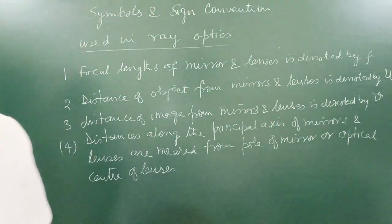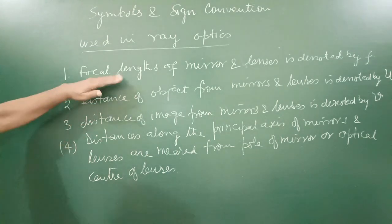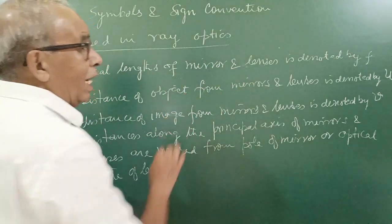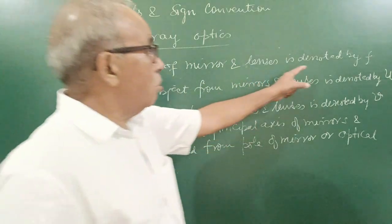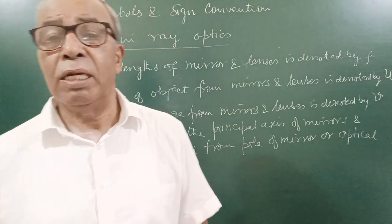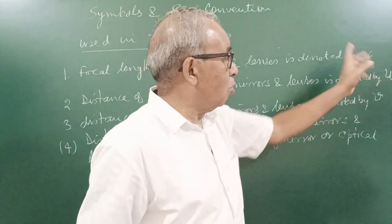To save time of video, I have written already here. Focal length of mirror and lenses is written by small f.